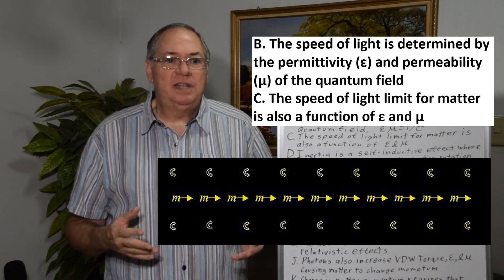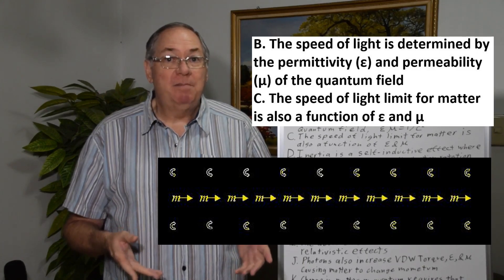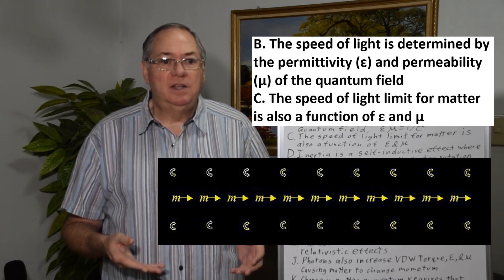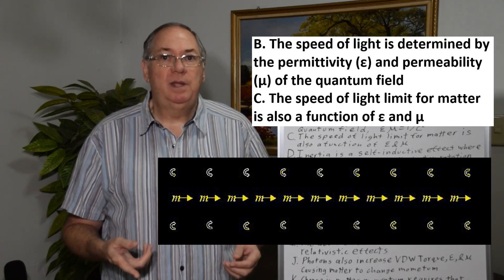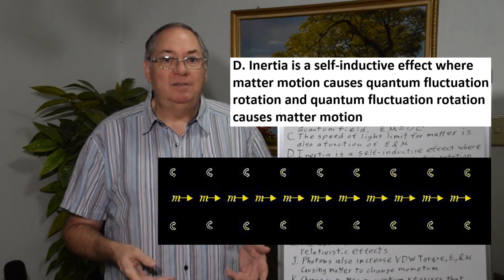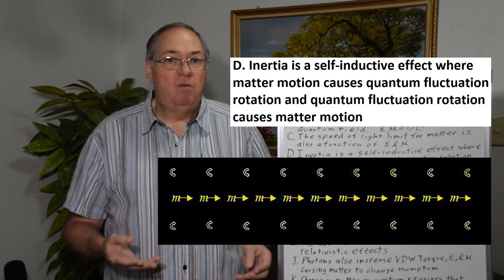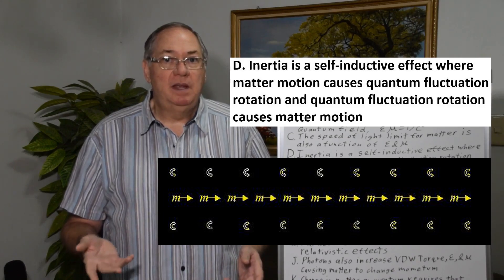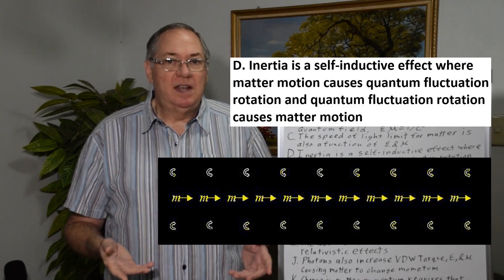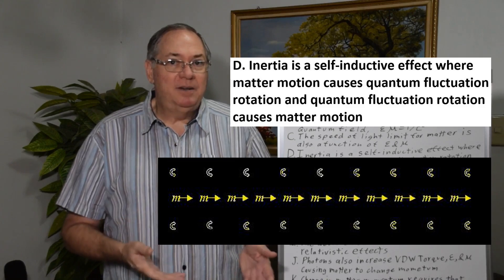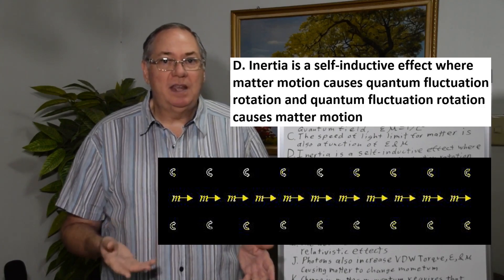Now we also need to understand the speed of light limit for matter comes from the same place because it's the same speed of light limit. So the speed of light limit of matter is also a function of the permittivity and permeability of the quantum field. So matter must be interacting with the quantum field in some way for it to have the same speed of light limit. But this tells us that matter's speed of light limit is determined by the permittivity and permeability.